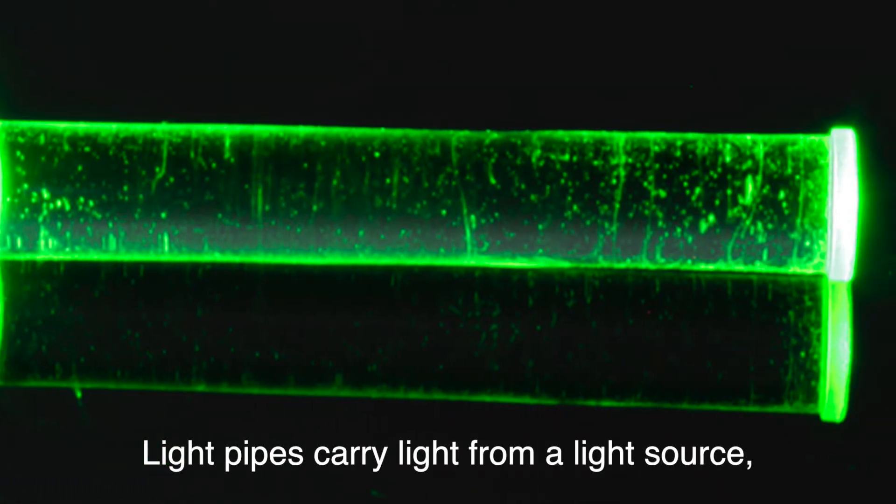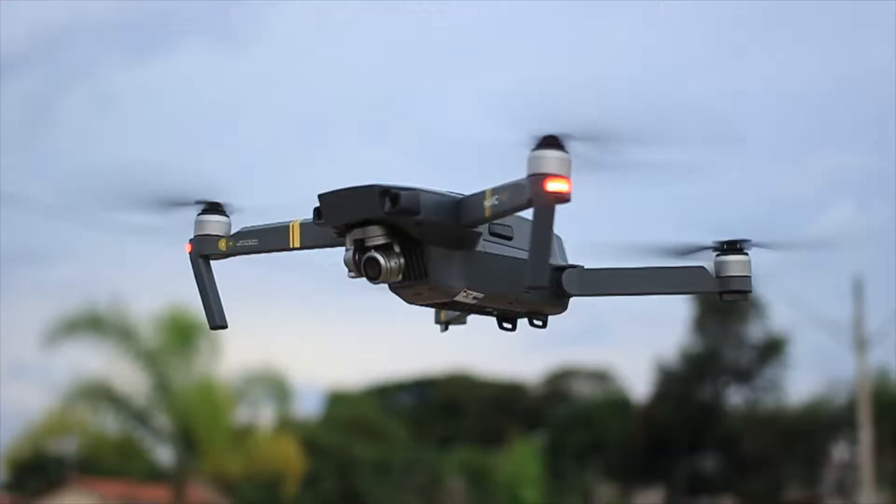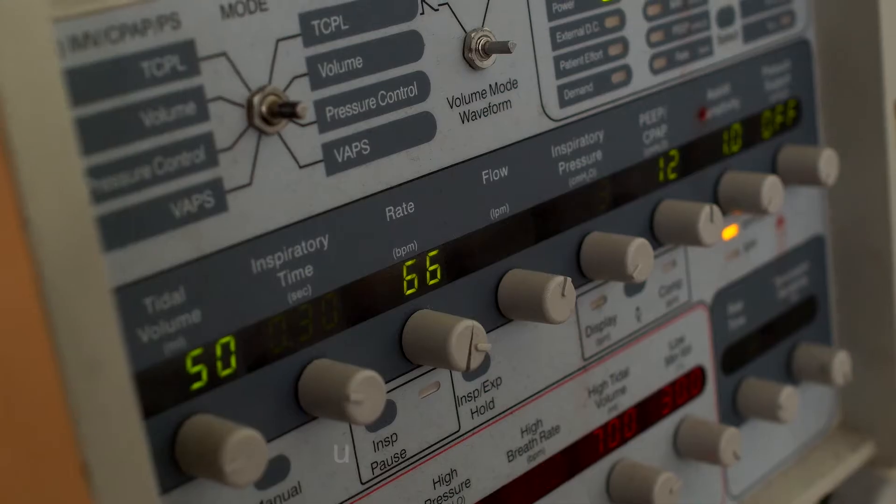Light pipes carry light from a light source, like an LED on the circuit board, to the desired exit point, usually an HMI.